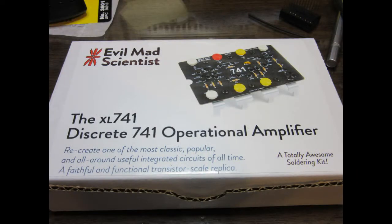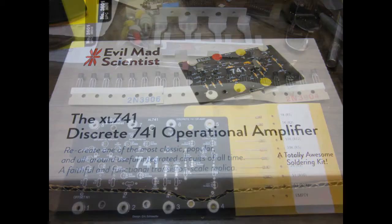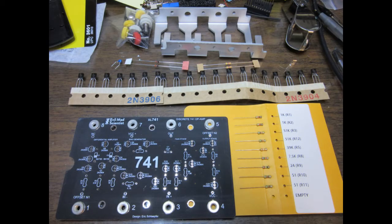The folks at Evil Mad Scientist have produced a kit that lets people build the original 741 circuit using discrete components. Their circuit uses 20 bipolar transistors, 11 resistors, 2 diodes, a capacitor, and nothing else.